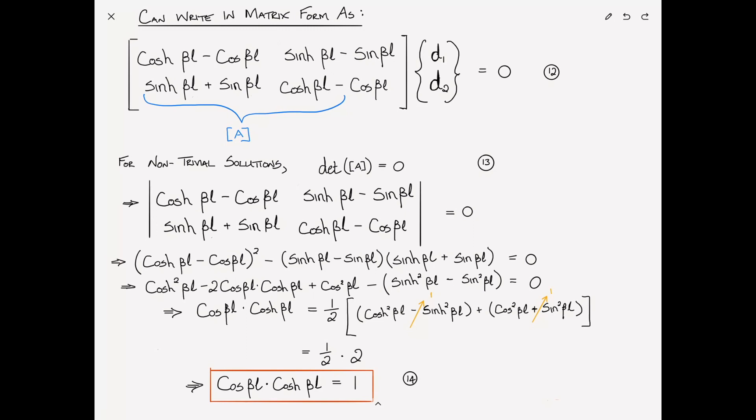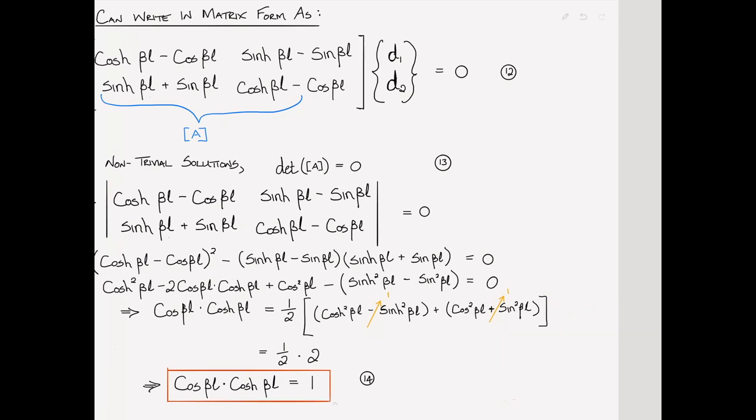From this equation, we can calculate β. And from β, we can calculate the frequencies, ω. Now, this frequency equation really is a transcendental equation because the nature of these graphs are periodic and so that this solution happens multiple times. So what we do is we write cosine βₙL times cosh βₙL = 1, because for N = 1, N = 2, N = 3, there are infinite number of solutions corresponding to the fact that there are an infinite number of mode shapes.